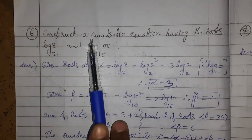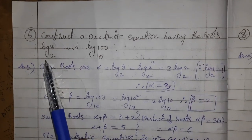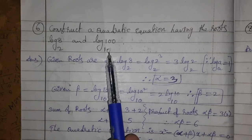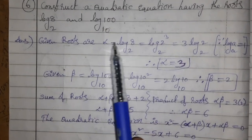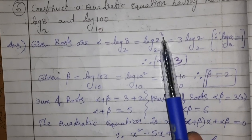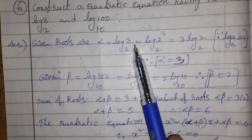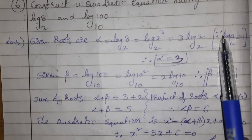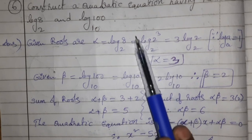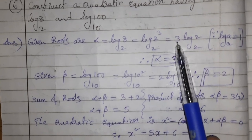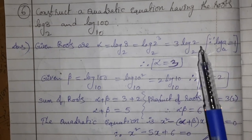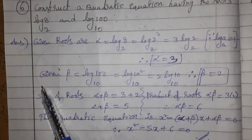Sixth question: construct a quadratic equation having roots log₂8 and log₁₀100. Alpha = log₂8. Write 8 as 2³, so log₂(2³) = 3·log₂2 = 3 × 1 = 3.